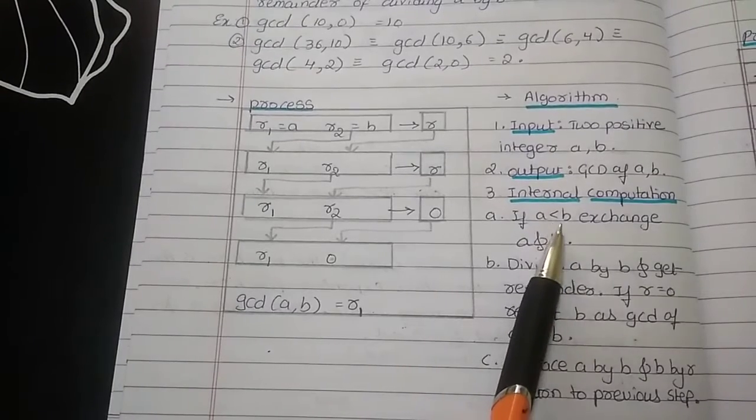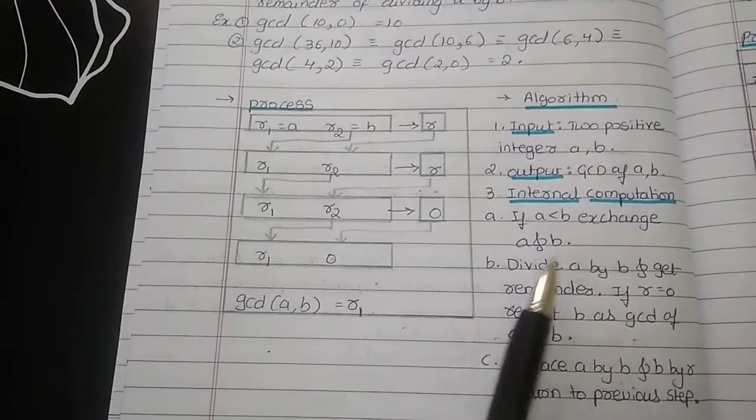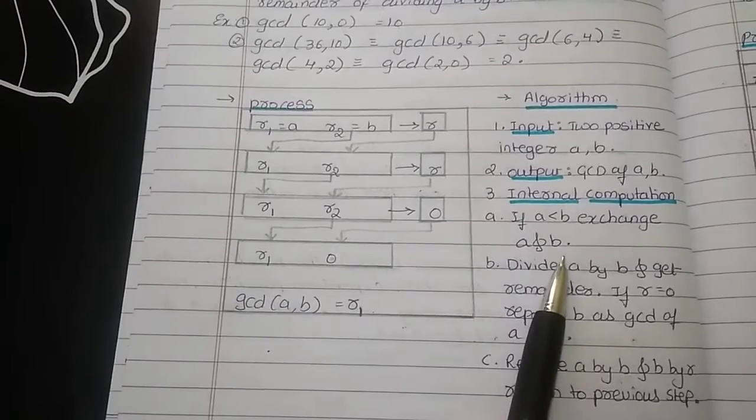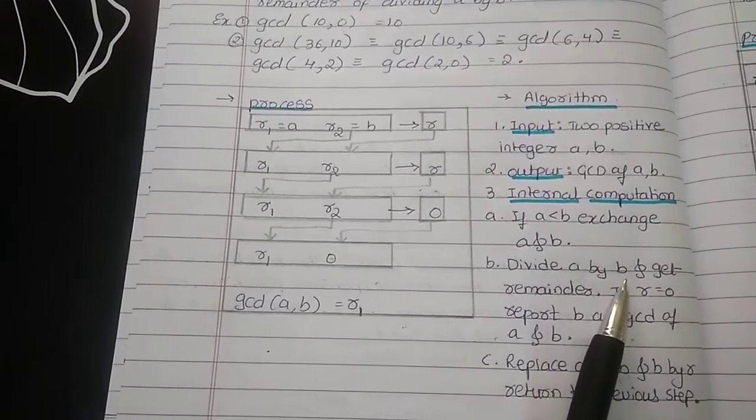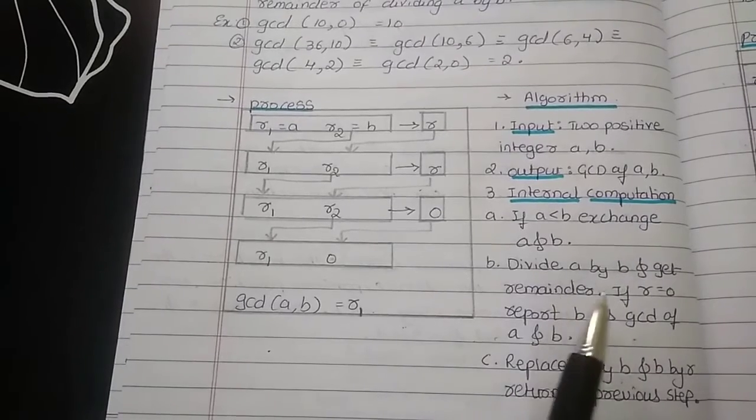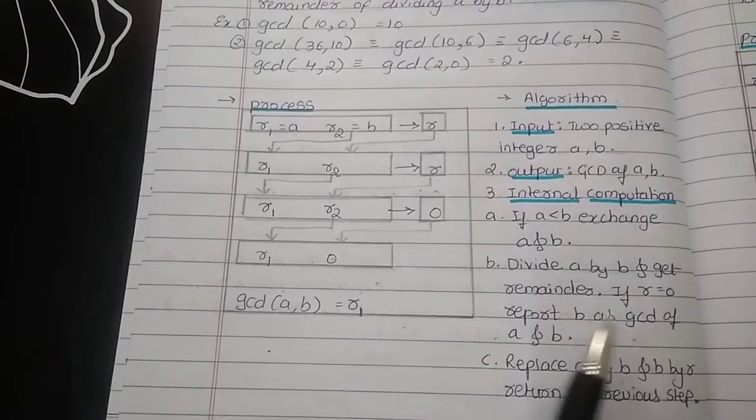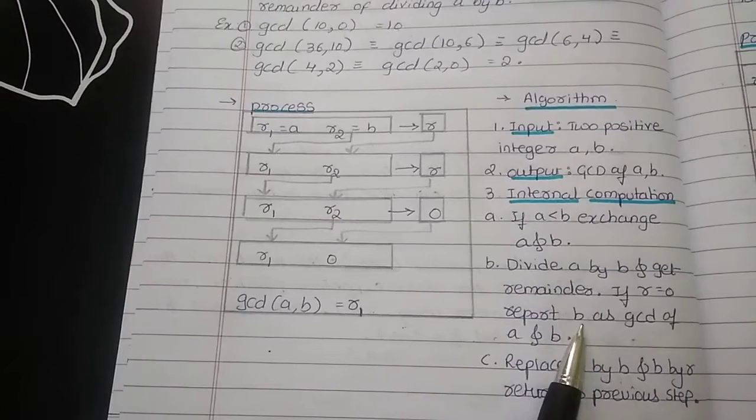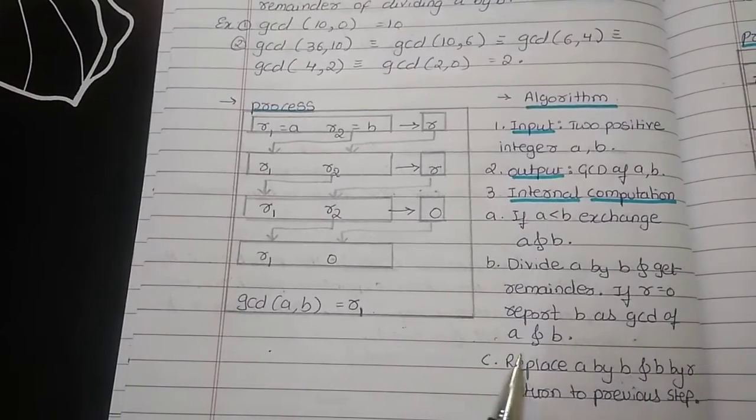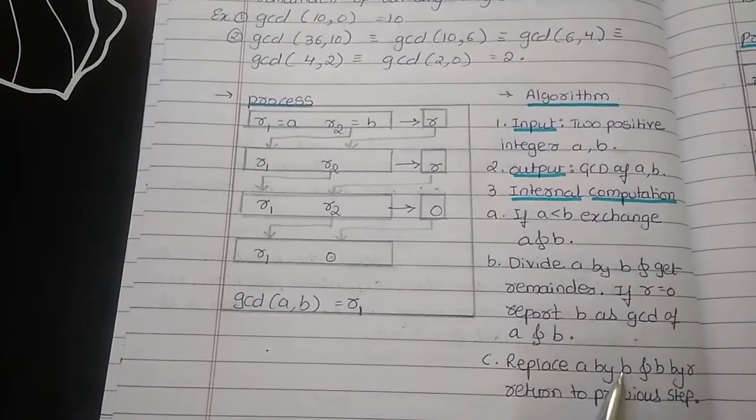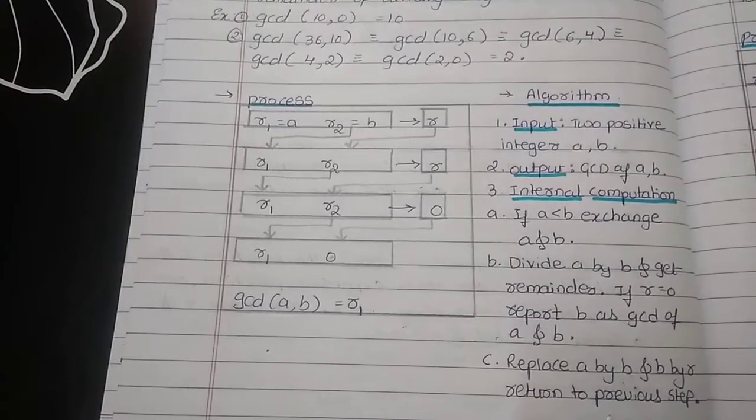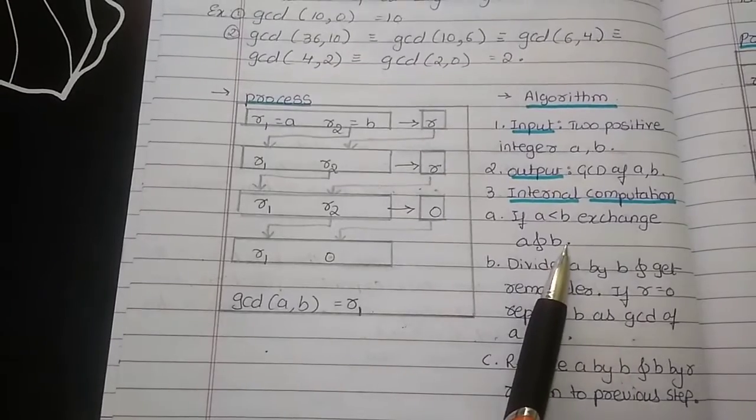first it will check whether the value of A is less than B. If it is, then it is going to exchange the positions of A and B and divide the value of A by B and get the remainder. If the remainder is 0, then B is reported as GCD of A and B. If the remainder is non-zero, then we are replacing A by B and B by R and return to the previous step.